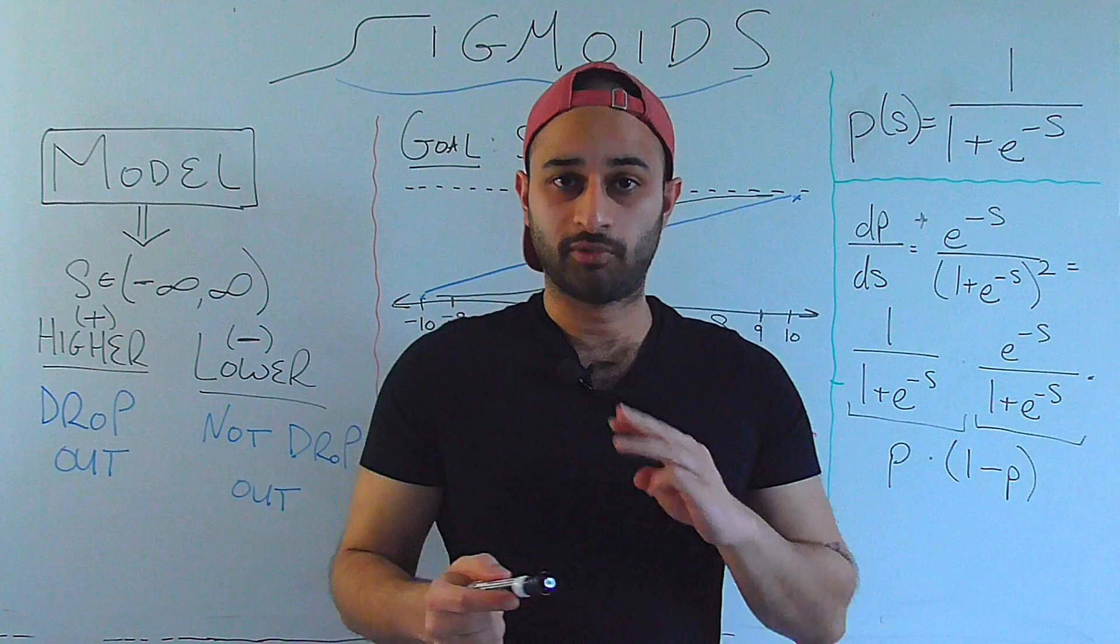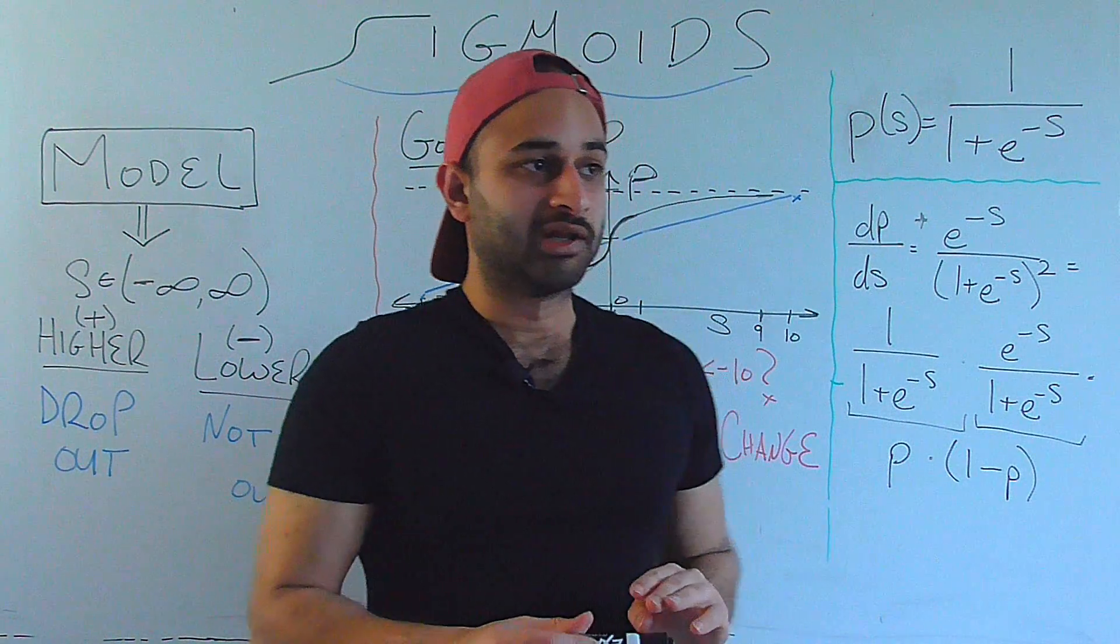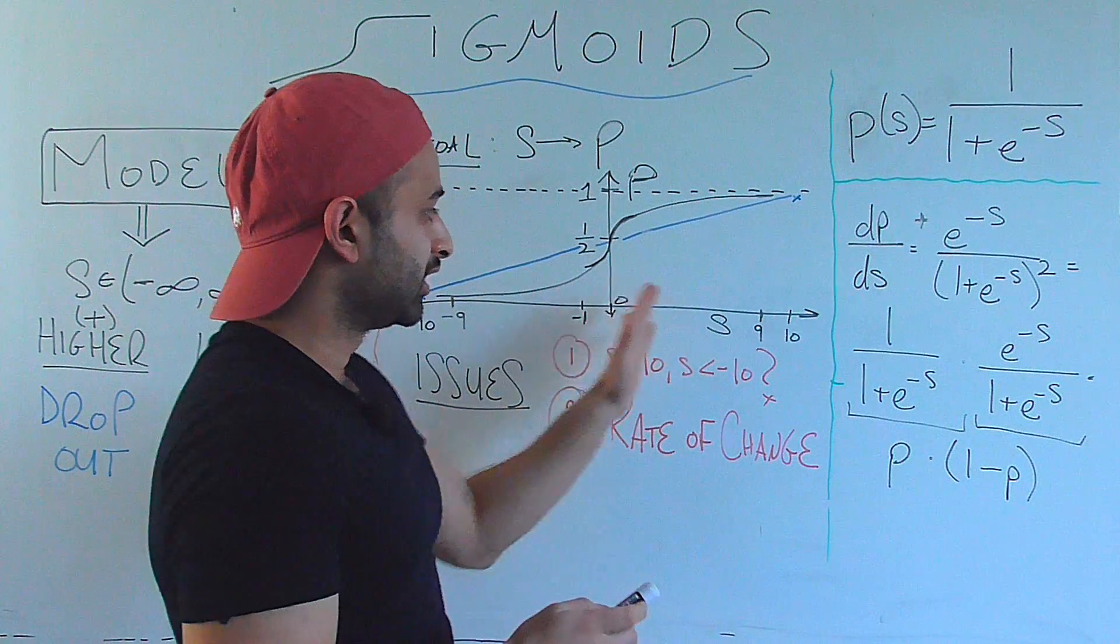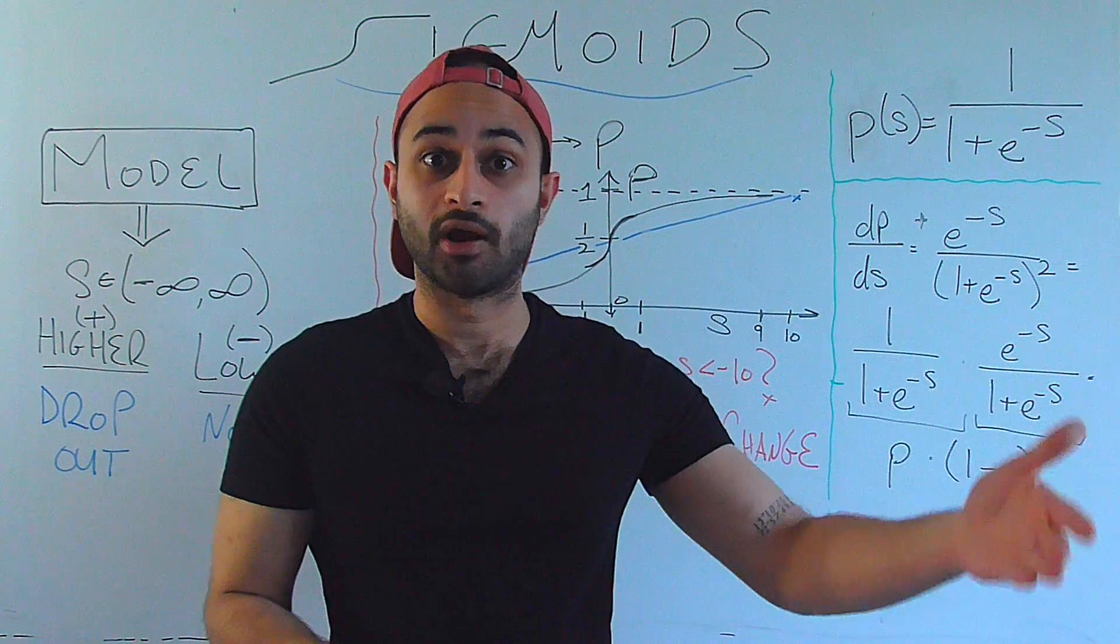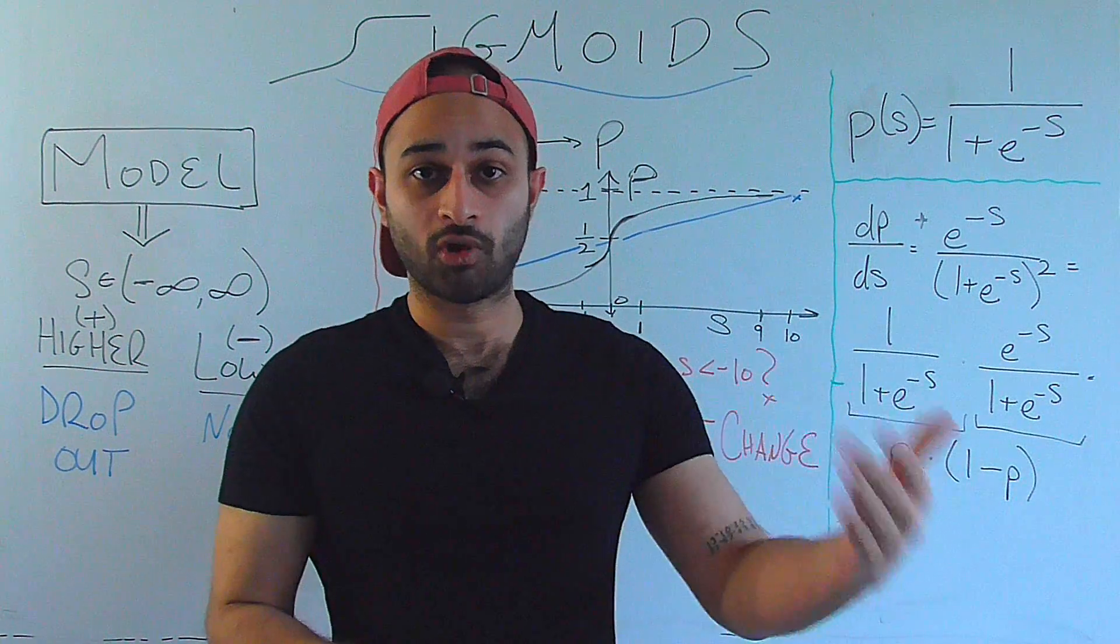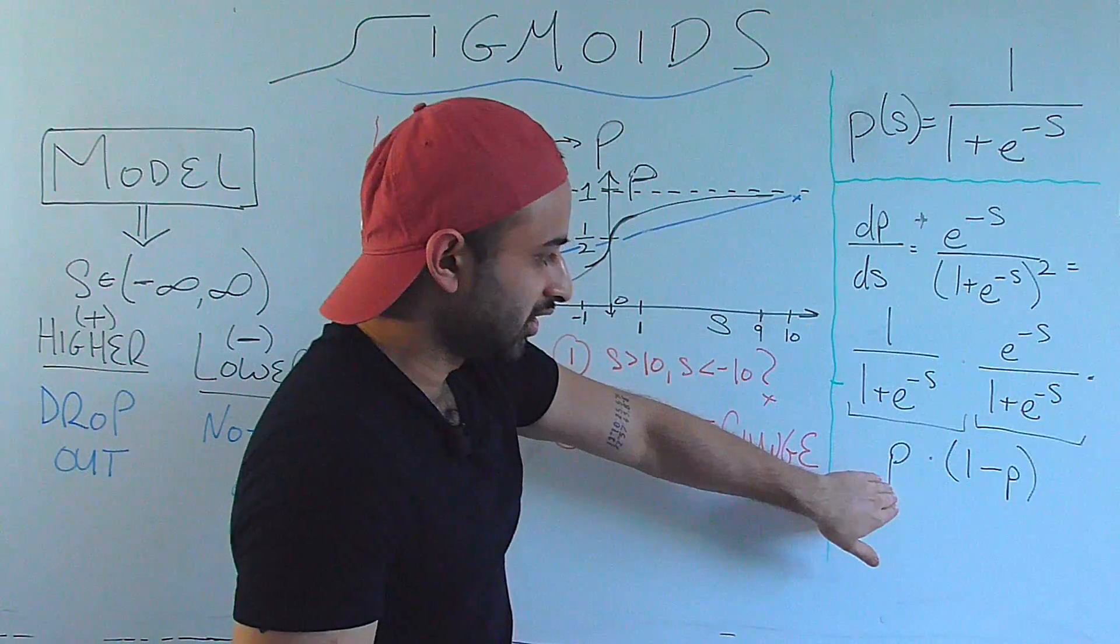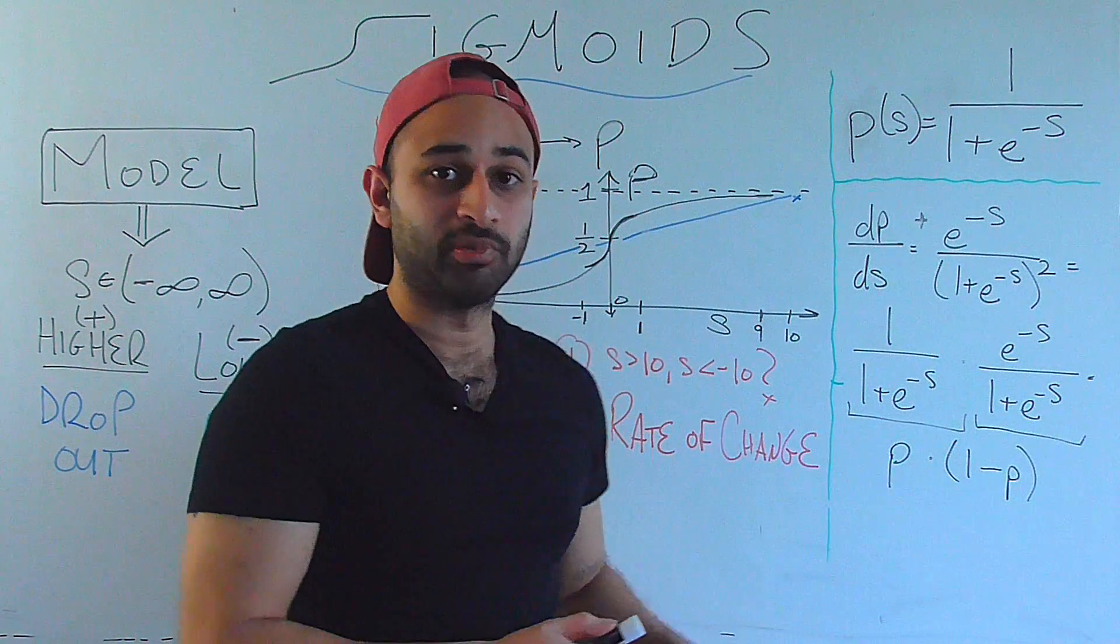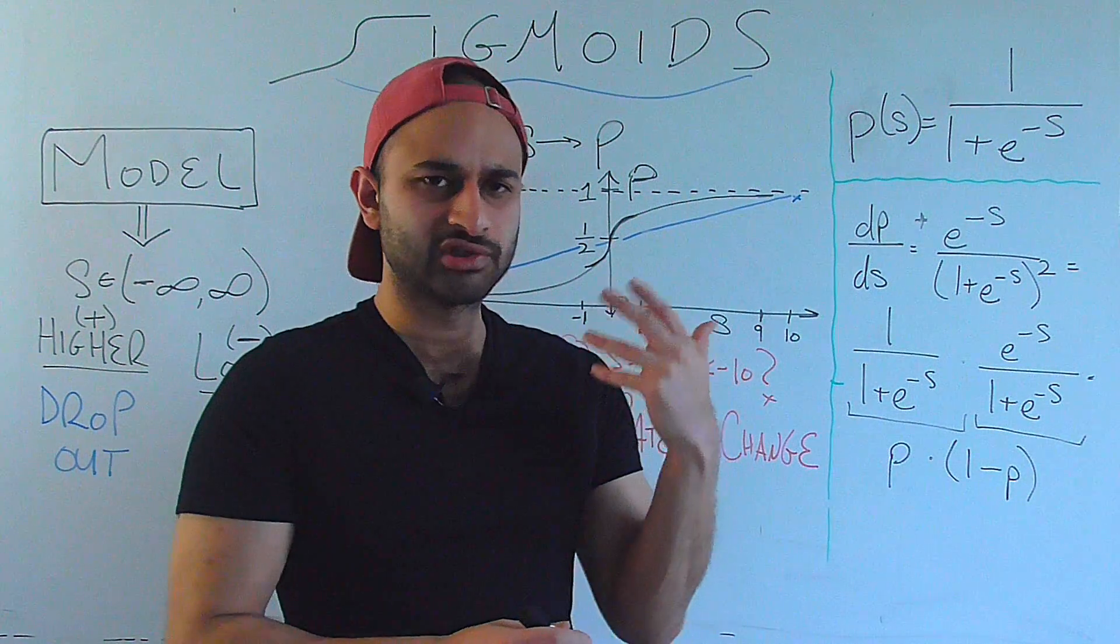And not just is it a nice form, it also has a great intuitive explanation. For example, let's consider three cases to close this video out. Let's say that your probability was already very high, so your score is very high and your probability was near 1. If your probability is near 1, you plug in 1 into here, and you get that the derivative ends up being 0.